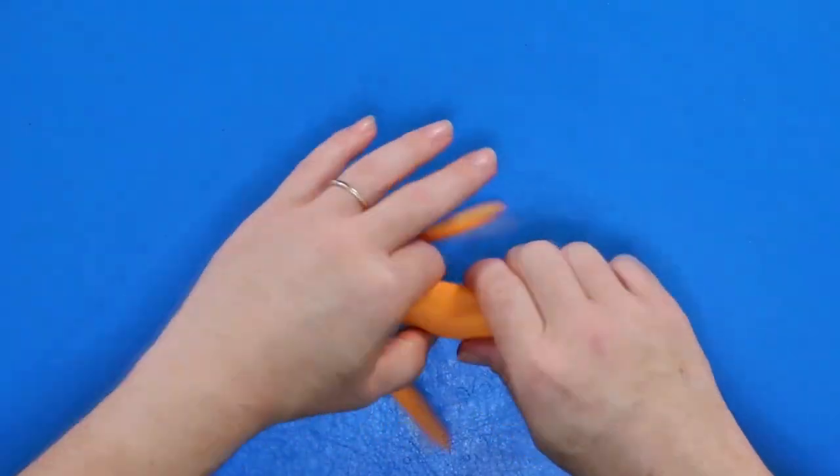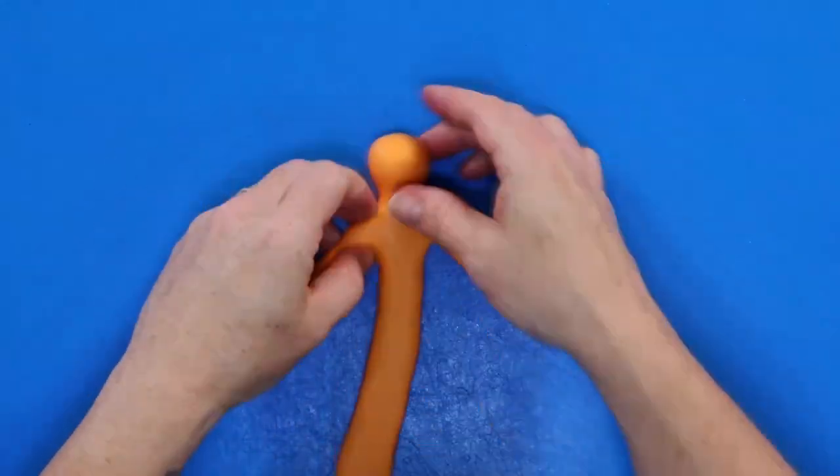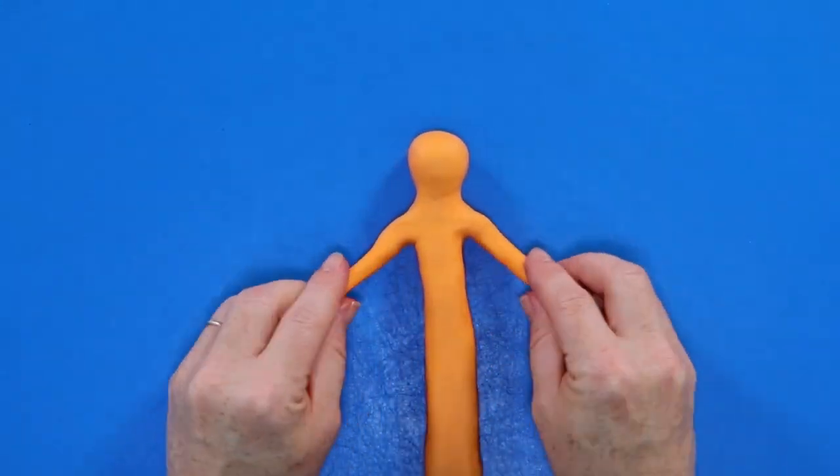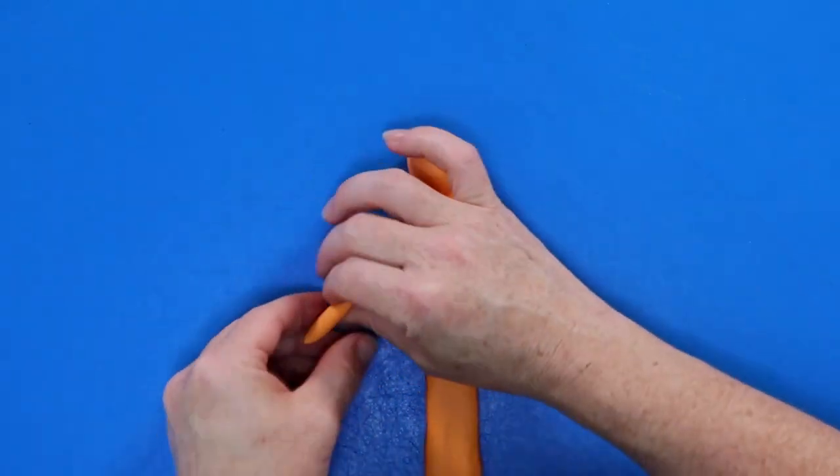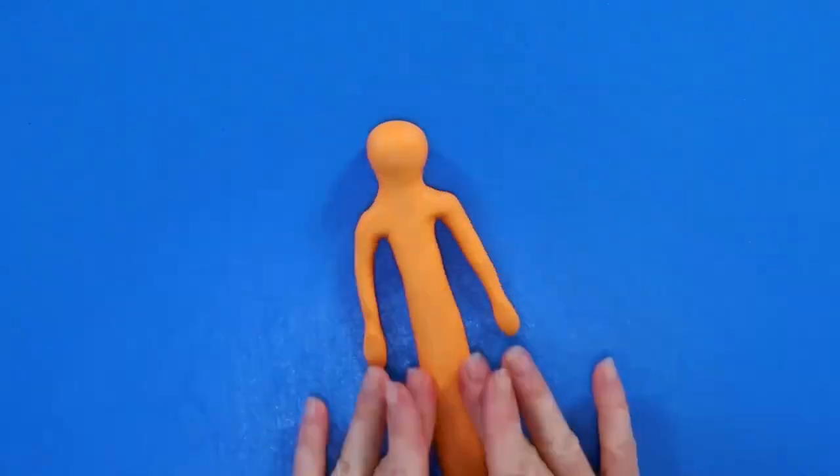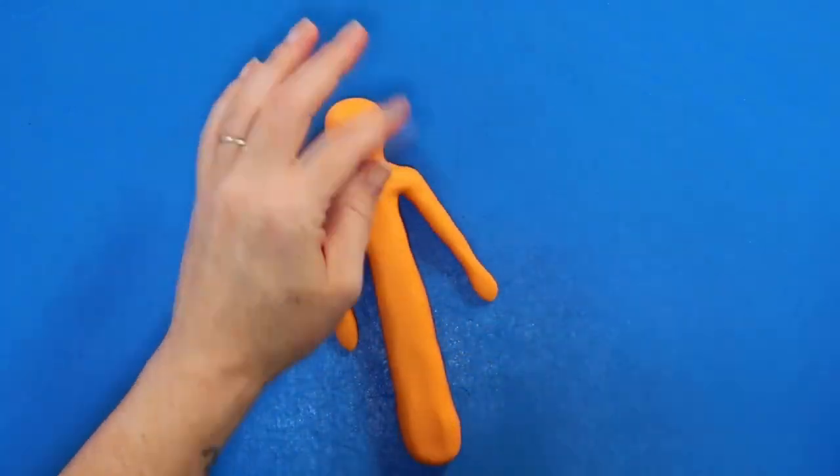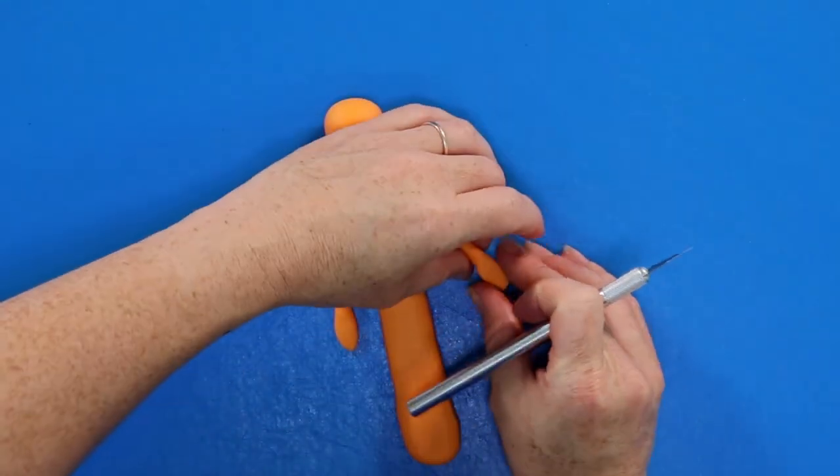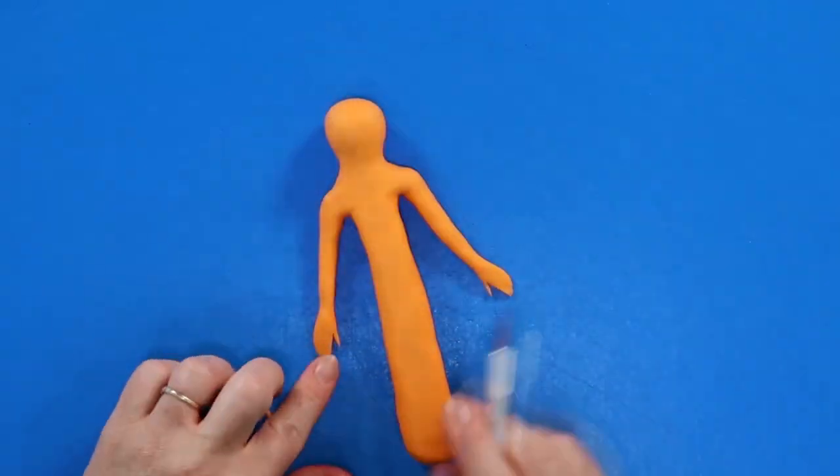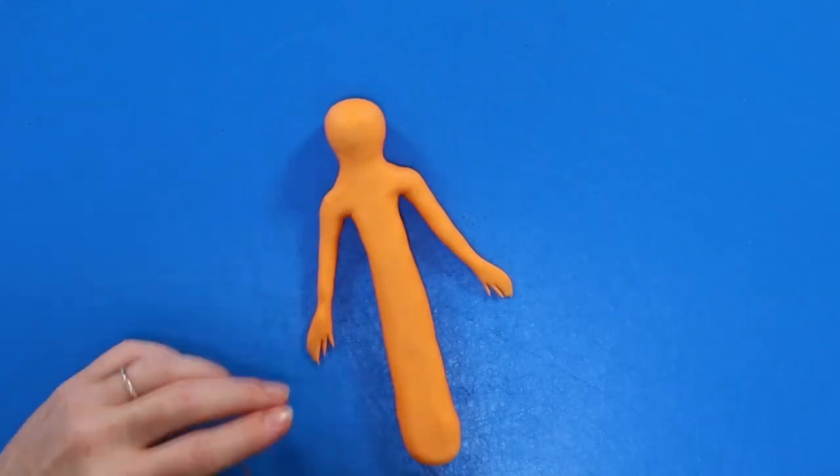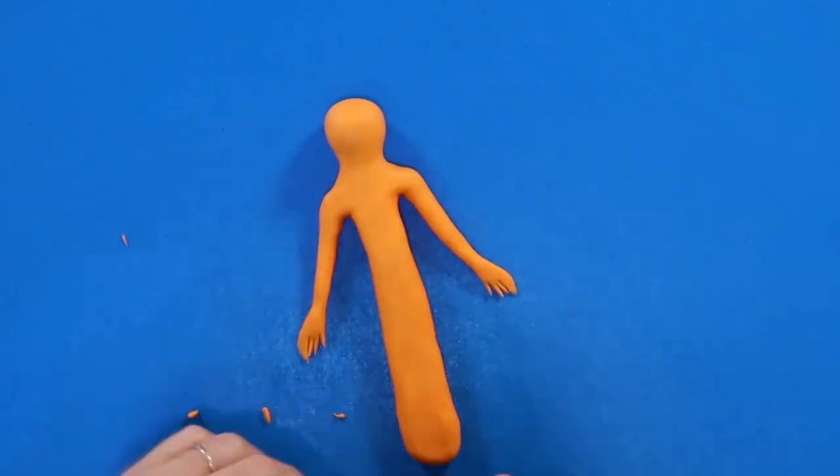Once you've shaped the body to be how you want it to look, we're gonna jump back to the arms for a second and we're gonna shape those wrists so that way we can start working on his hands. So as you can see I have flattened out the hands a little bit because we want his fingers to look nice and skinny, and I'm just gonna use my exacto knife to cut some little fingers and I'm gonna alternate so that way things look nice and even as I'm going.